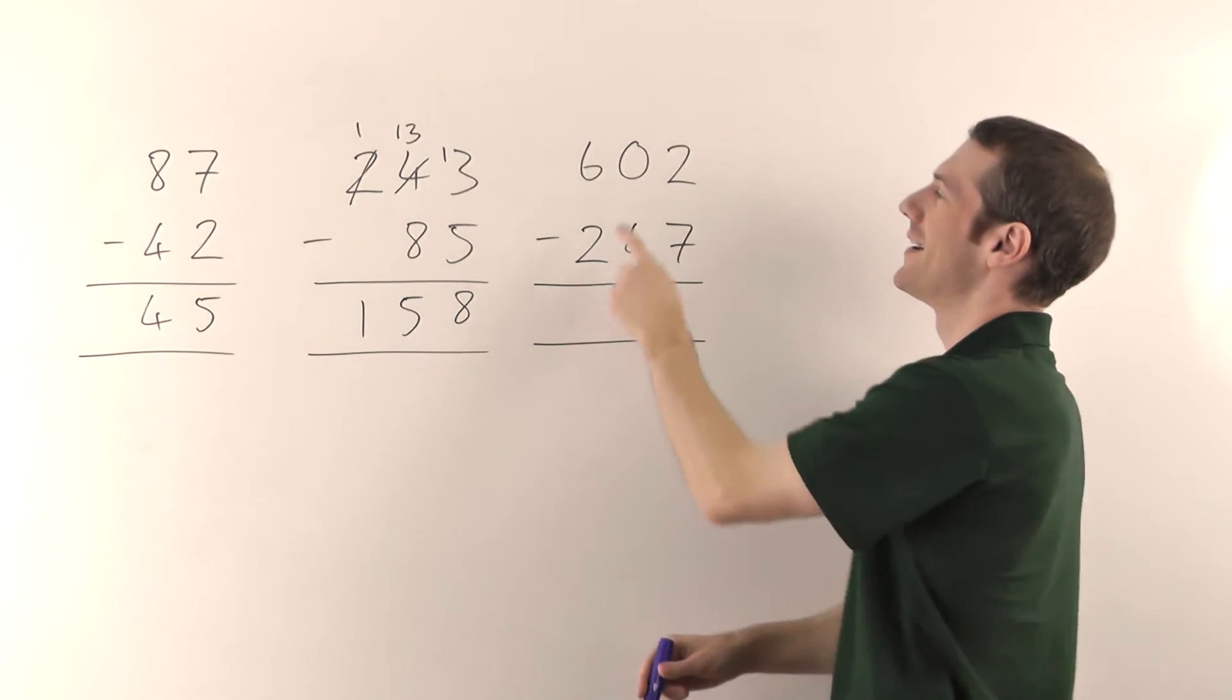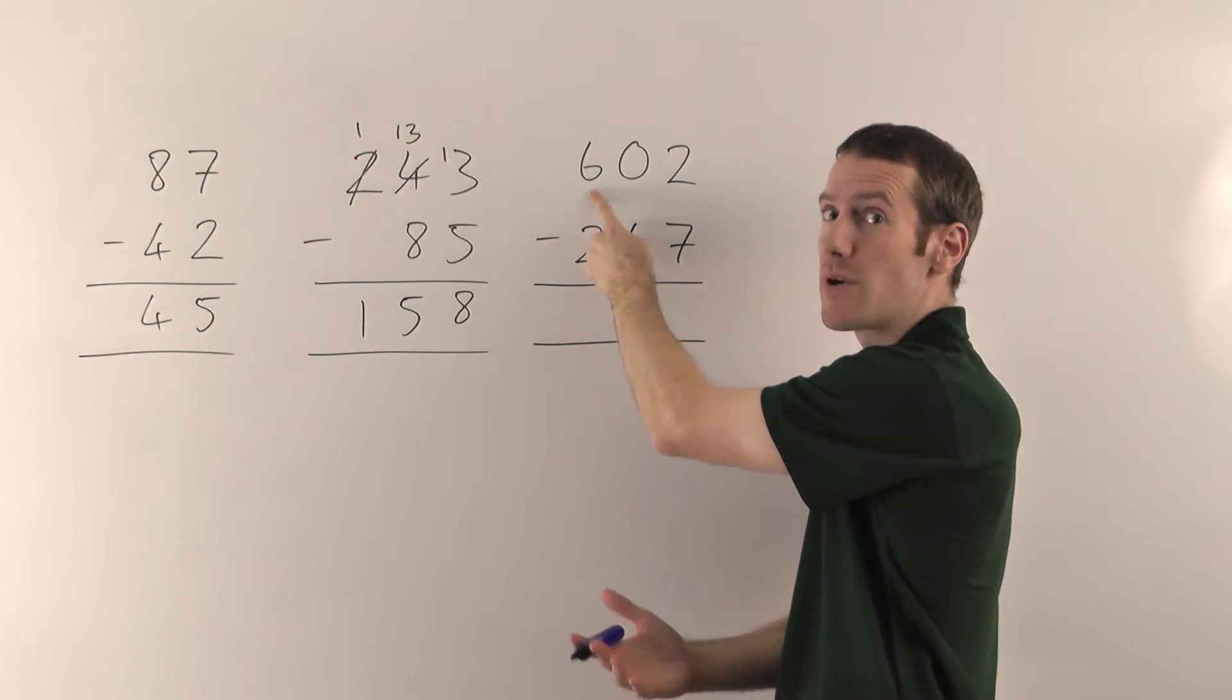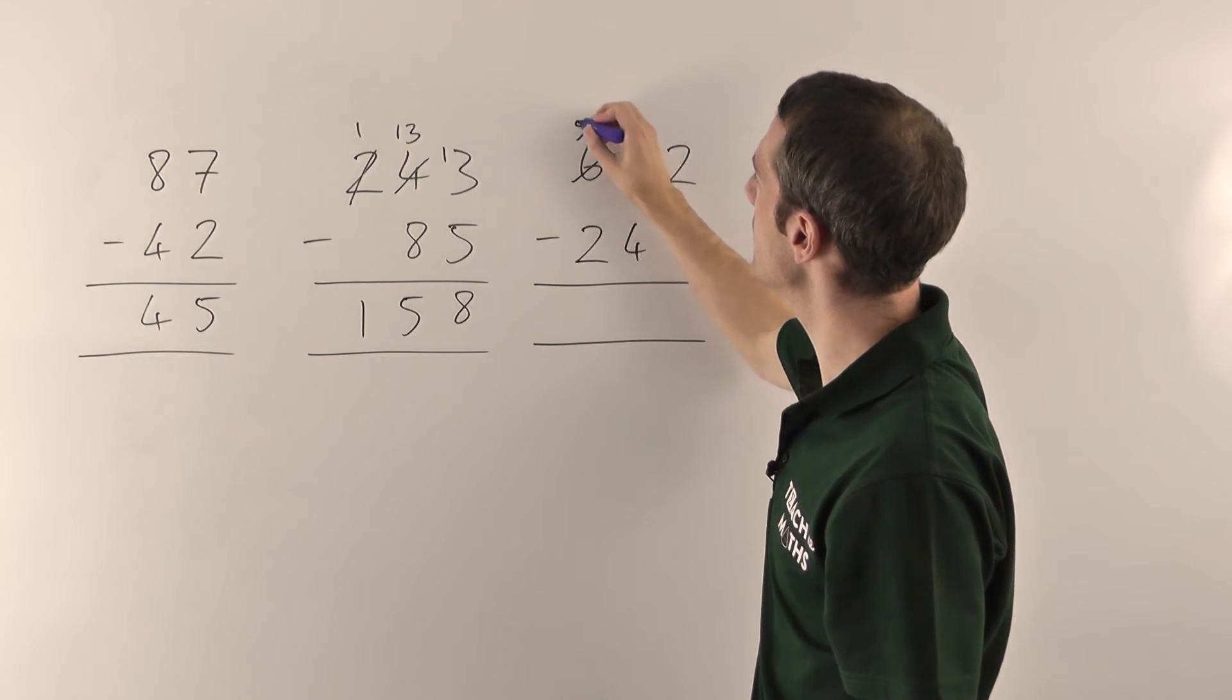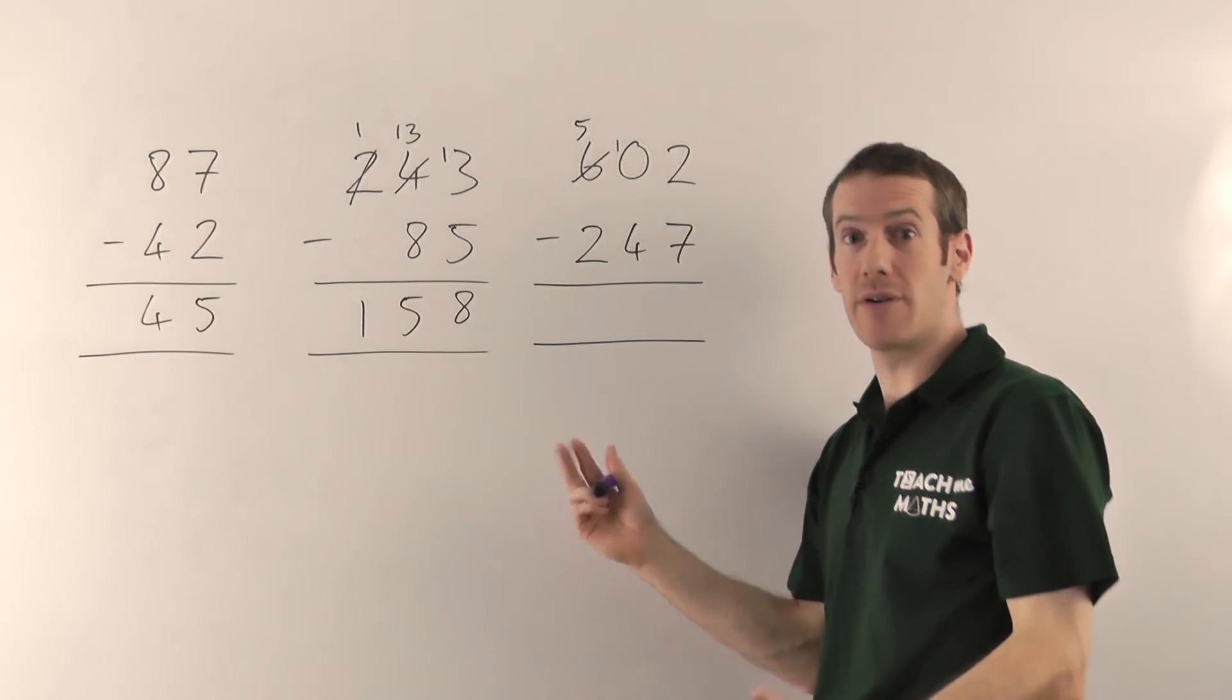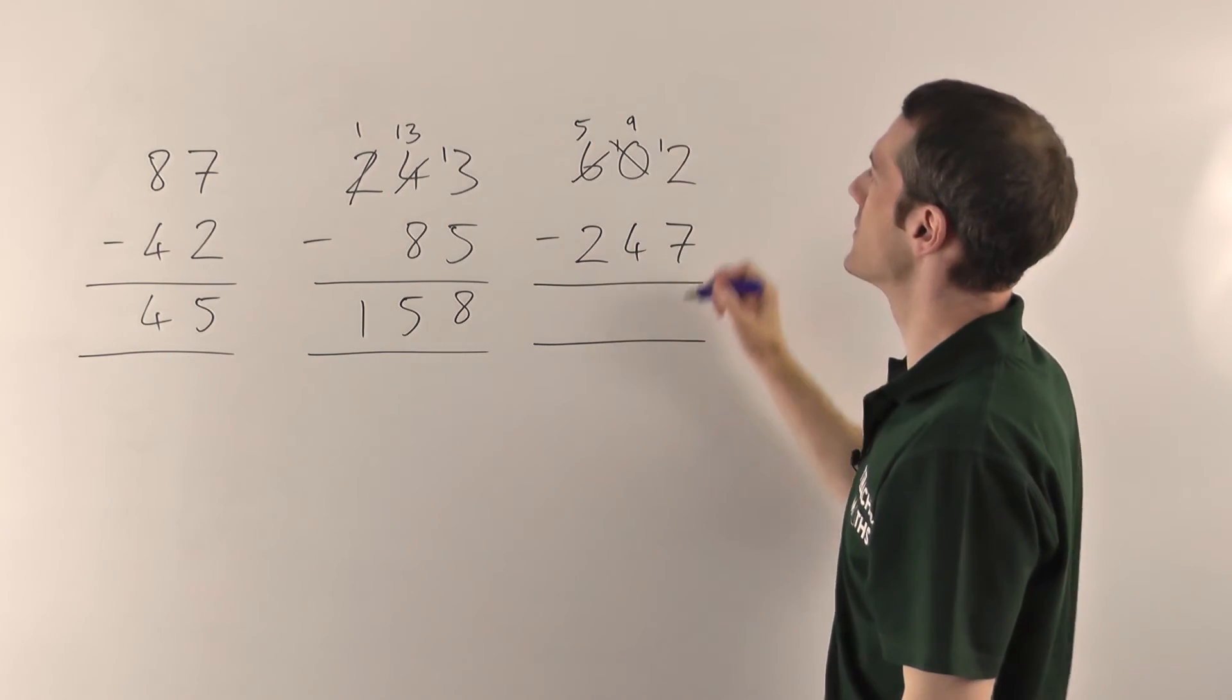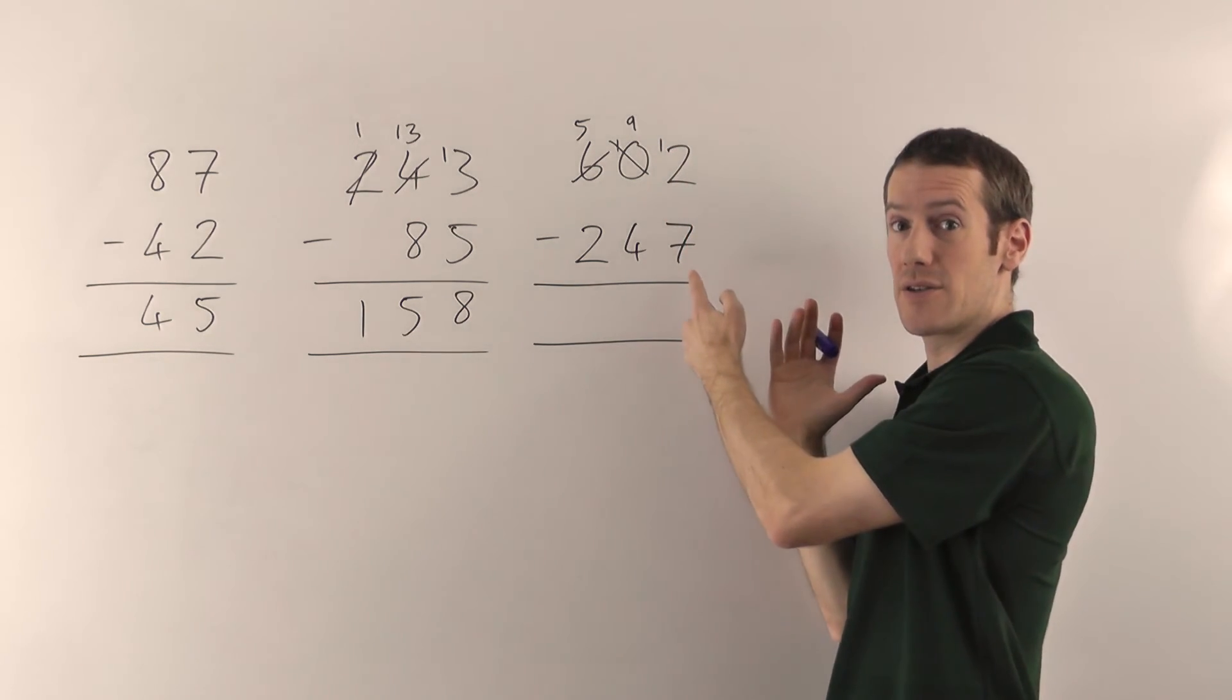Well, in this case, because there's nothing here, you've got to borrow from the 6 first. That's all it is. You just keep going along until you get something that you can borrow from. So you borrow from the 6, you knock that down to a 5, that goes down by 1, you put a 1 here, and that makes your 0 into a 10. Now I've got something to borrow from. So I can knock the 10 down to a 9, and add 1 onto here. That goes down by 1, you put the 1 onto here. So the 2 becomes a 12, and now I can do the subtraction.